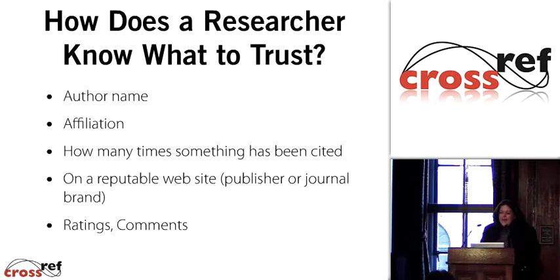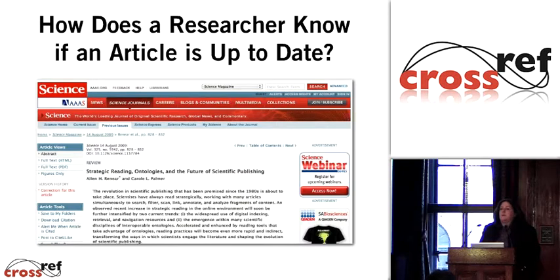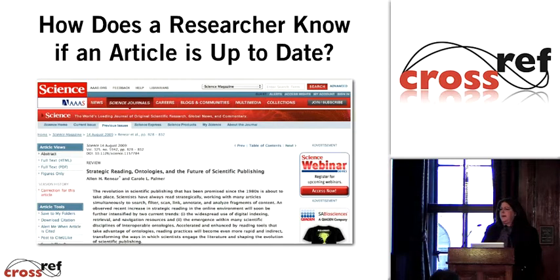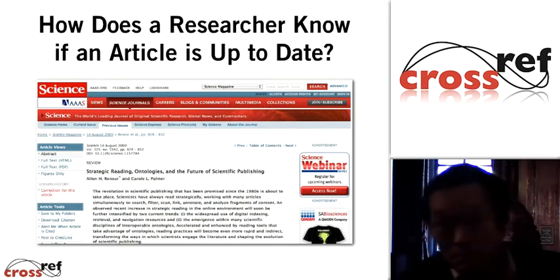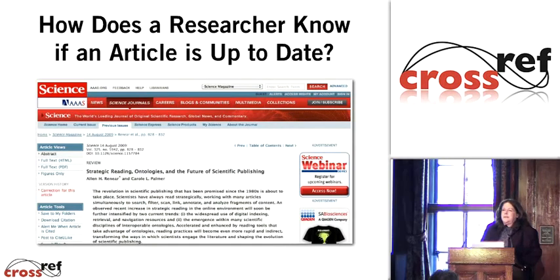We asked another question: how does a researcher know if an article is up to date? So here's an article from the Science website — and I know that those of you in the back can't really read this. We're in the UK, and I understand that people in the UK really like quizzes. So here's your quiz: how do you know if this article is up to date on the Science website? Does anybody know?